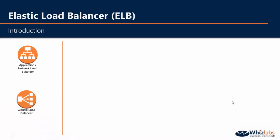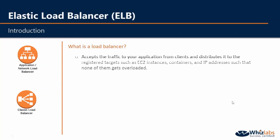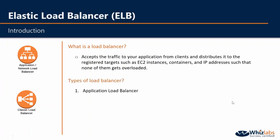In this video, we are going to learn one of the most important topics of this course: Elastic Load Balancer. A load balancer basically accepts the traffic to your application from clients and distributes it to the registered targets such as EC2 instances, containers and IP addresses, such that none of them gets overloaded. The types of load balancer we are going to learn are Application Load Balancer, Network Load Balancer, and Classic Load Balancer.